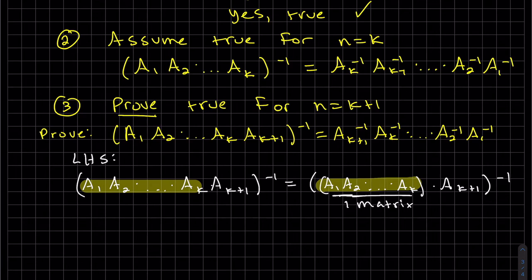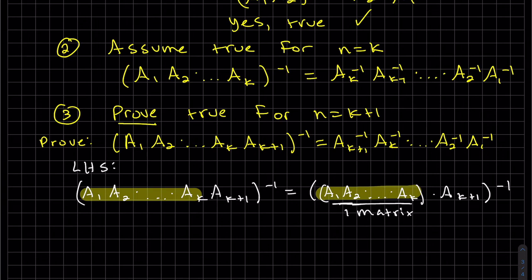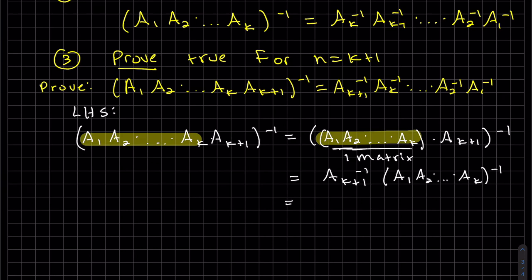Now that we see that that's one matrix, well, then we can apply the inverse rule when there's only two. So this would become in reverse because we know it's true for two. Well, now we get to apply our given or assumption, our number two.